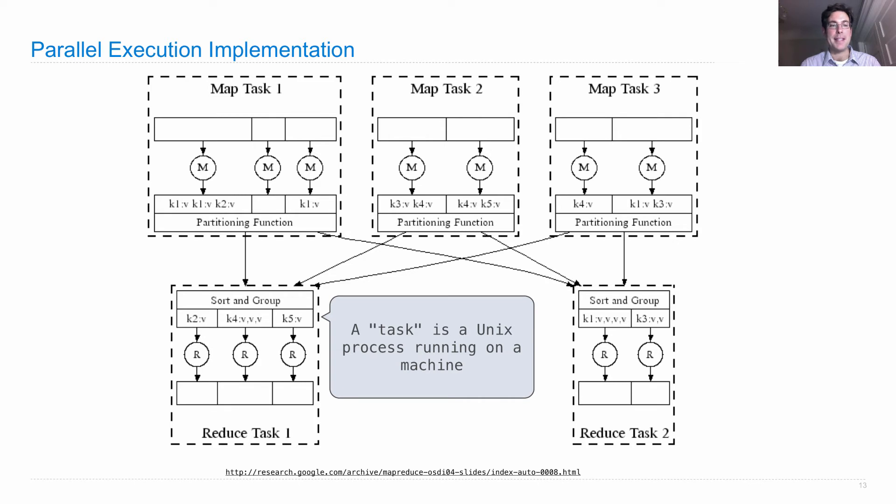As you can see in this case, a reduced task is handling three different keys: k2, k4, and k5, which is applying the same reduced function to each of these blocks, and then it finishes.